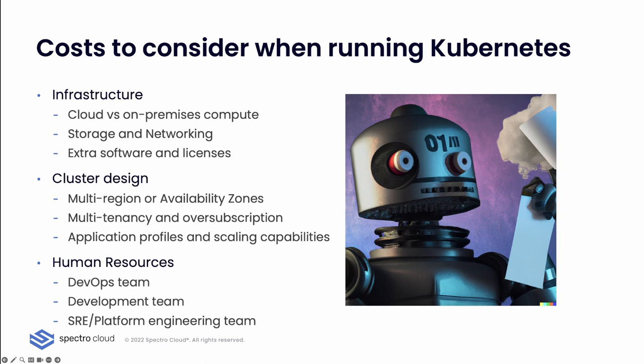Then you have the human aspects — how to grow skill sets within different teams. DevOps teams will have to learn how to factor Kubernetes into the different pipelines they are building. Developers will need to understand some basic Kubernetes constructs to facilitate their application integration into the platform — things like environment variables. They don't have to know all Kubernetes concepts, just enough to start coding efficiently. The SRE or platform engineering team is where you want to build the core skills, as they'll be responsible for deploying, maintaining, and performing day-two operations on those clusters.